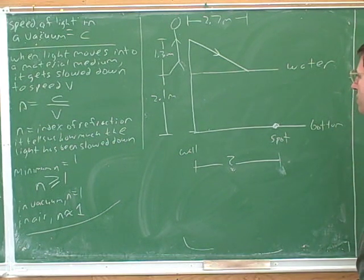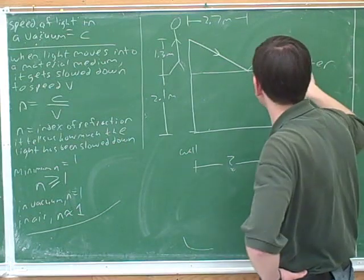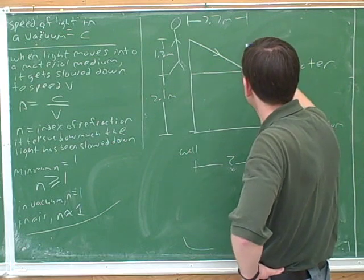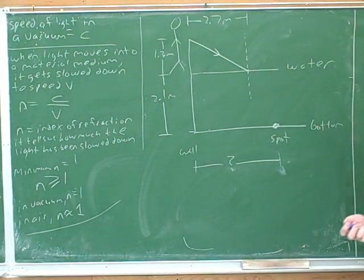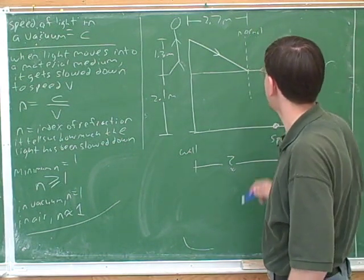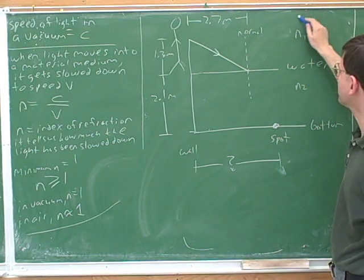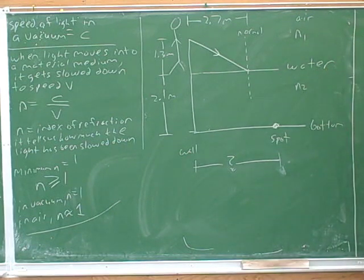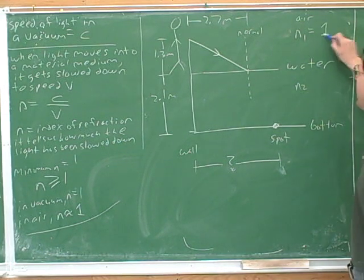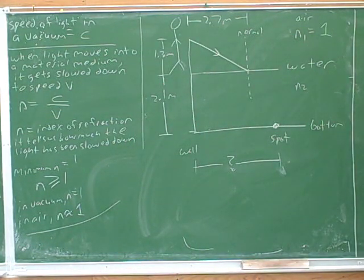How should we know that this is a Snell's law and refraction problem? Well, we're not interested in the light that's reflecting — that's not going to get to the spot down here, so we need the transmitted light. I know I should draw a normal; they didn't draw one in the picture but we need a normal to use Snell's law. Medium one is up here in the air, so n1 is approximately 1, and medium two is down here in the water, so n2 is 1.33.